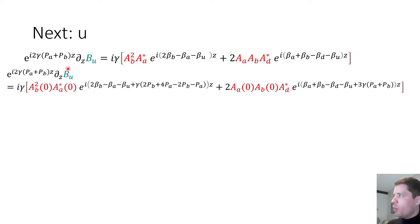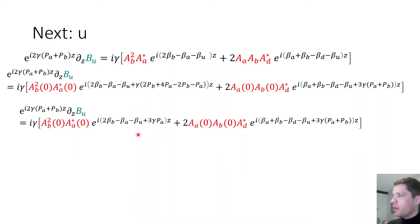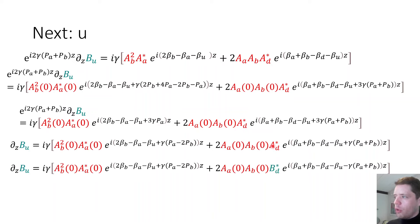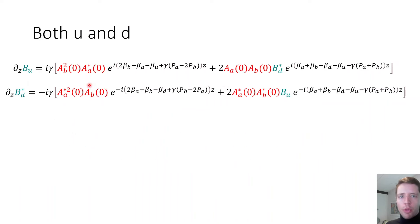Substituting the previously found expressions for the A and B components introduces new terms depending on cross-phase modulation. After simplification and dividing by the appropriate complex exponential, and substituting A_D* by B_D*, we obtain evolution equations for B_U and B_D*. These two equations are coupled: the derivative of B_U depends on B_D*, and the derivative of B_D* depends on B_U.